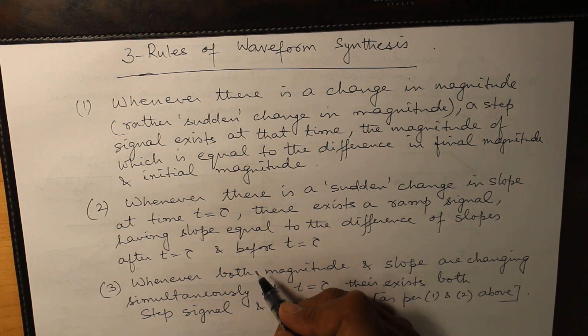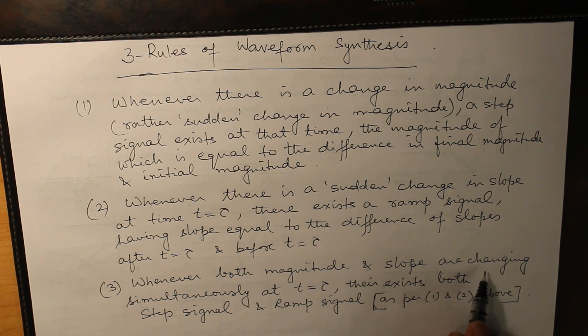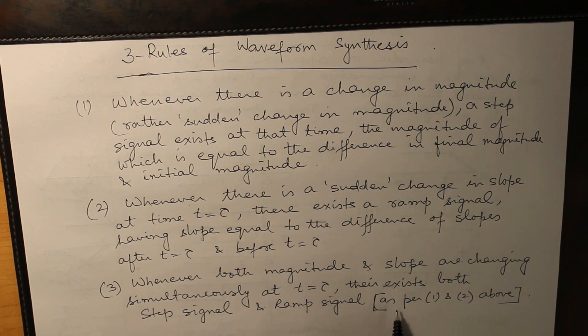Rule number three: when both magnitude and slope are changing simultaneously, there exist both a step signal and a ramp signal, which we will discuss in the next slide.